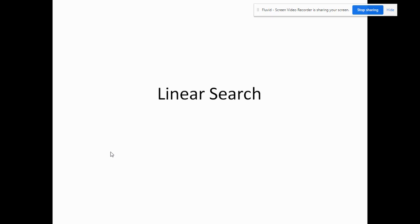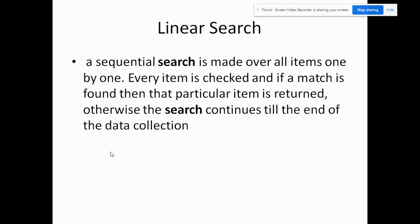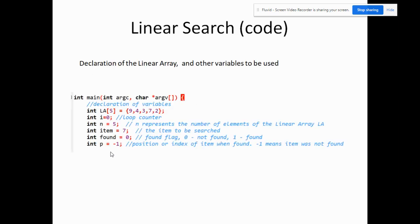Today we'll be talking about the linear search algorithm. In linear search, a sequential search is made over all items one by one. Every item is checked and if a match is found then the particular item or its position is returned, otherwise the search continues till the end of the data collection.